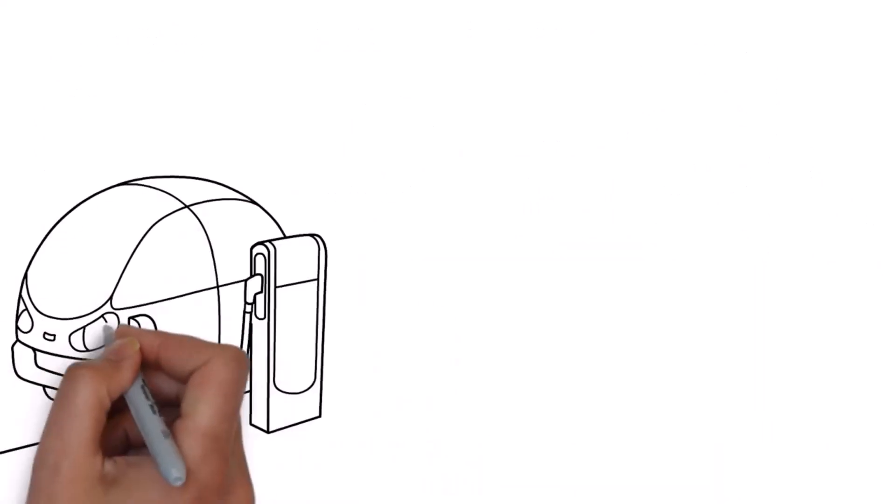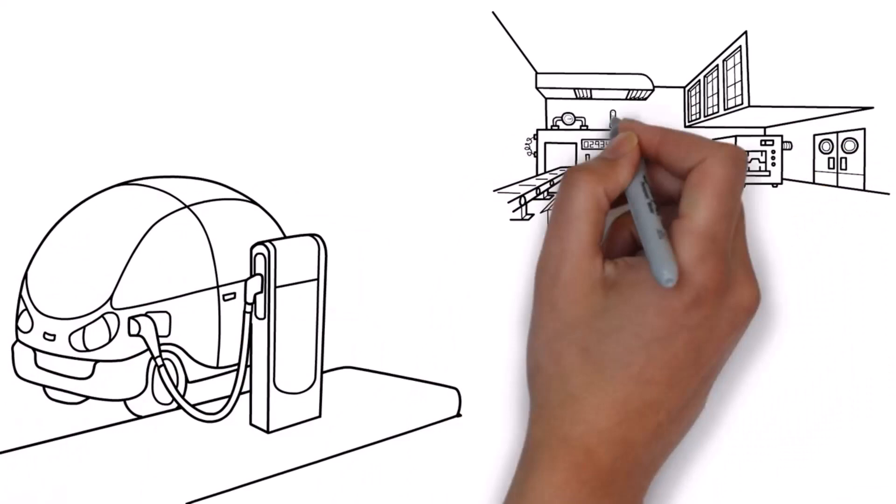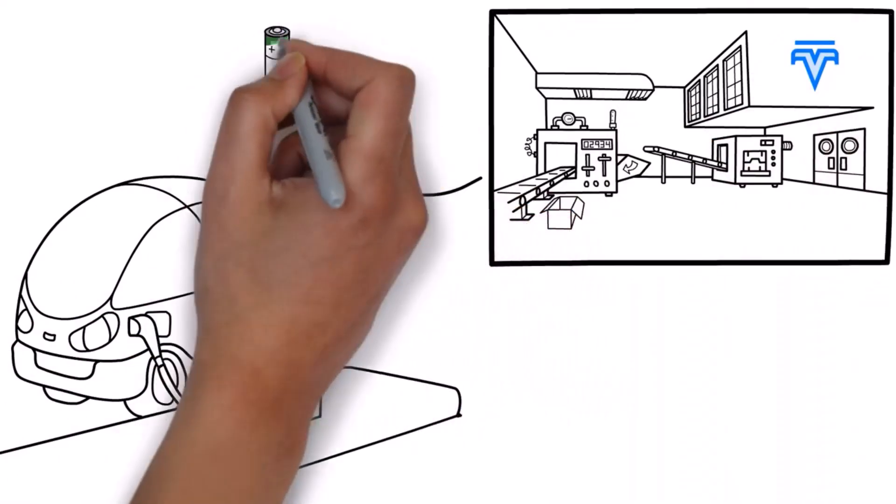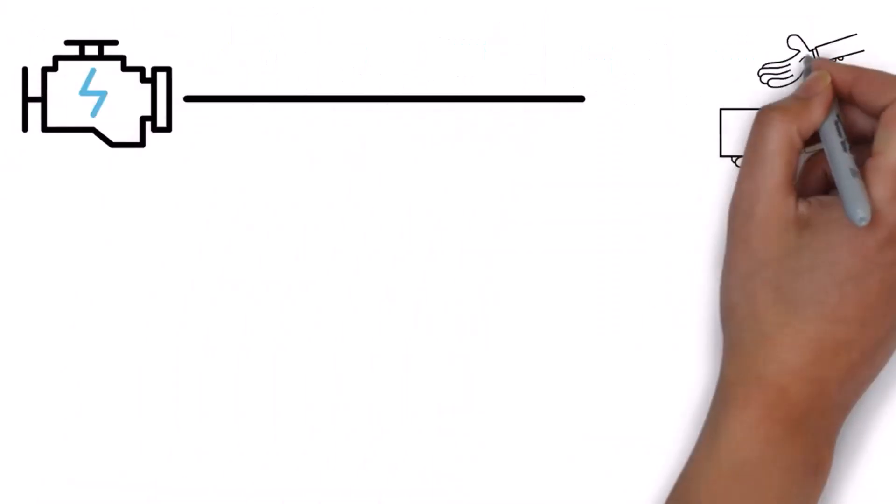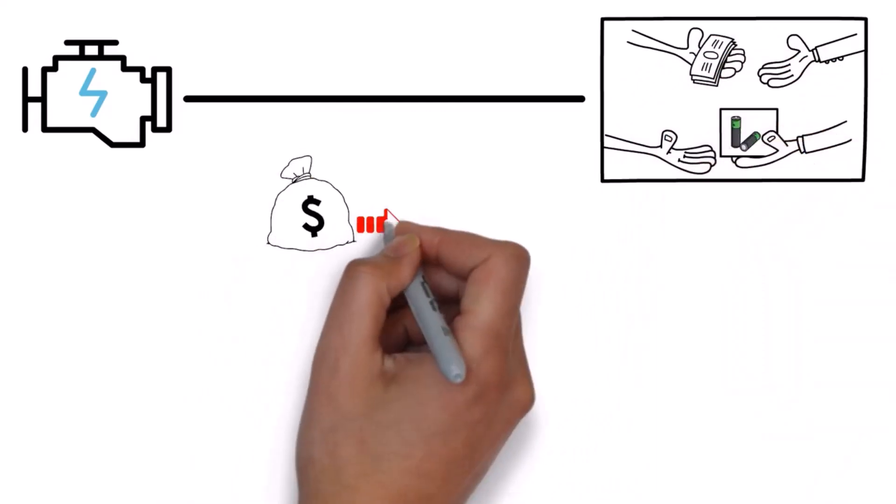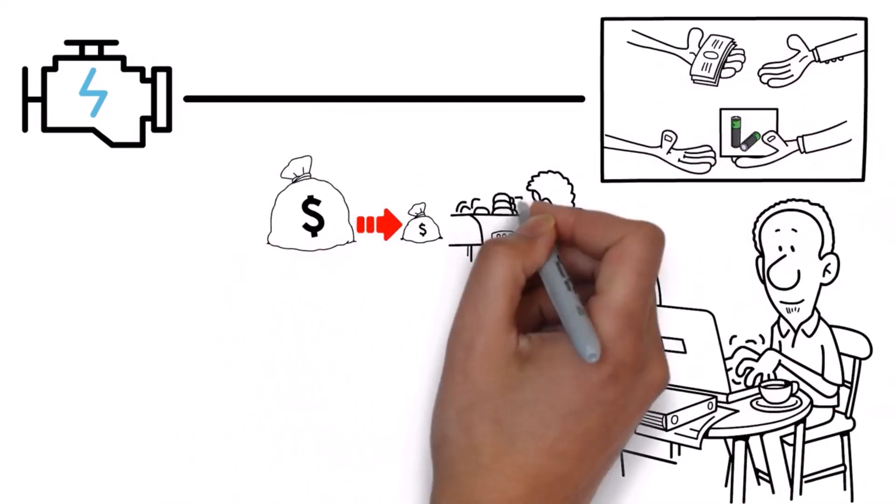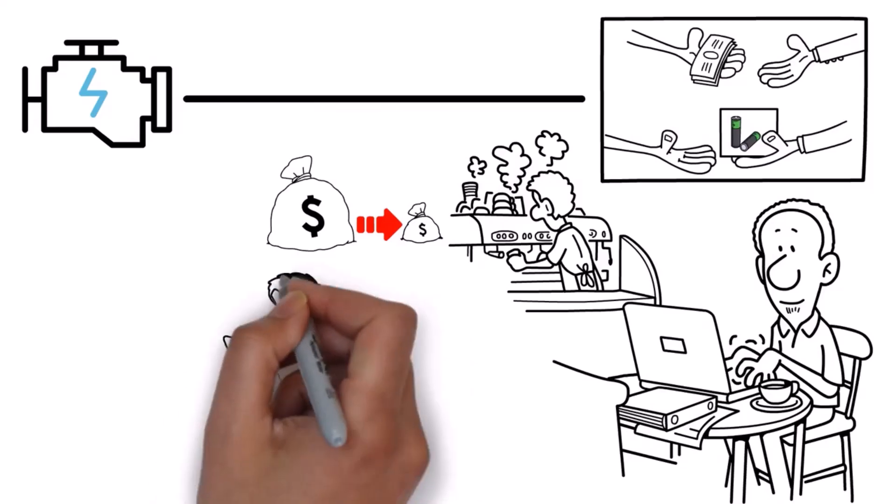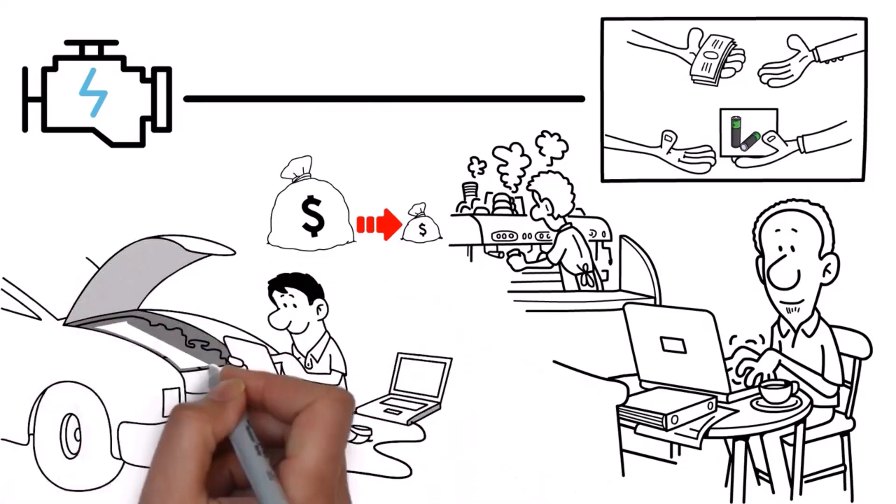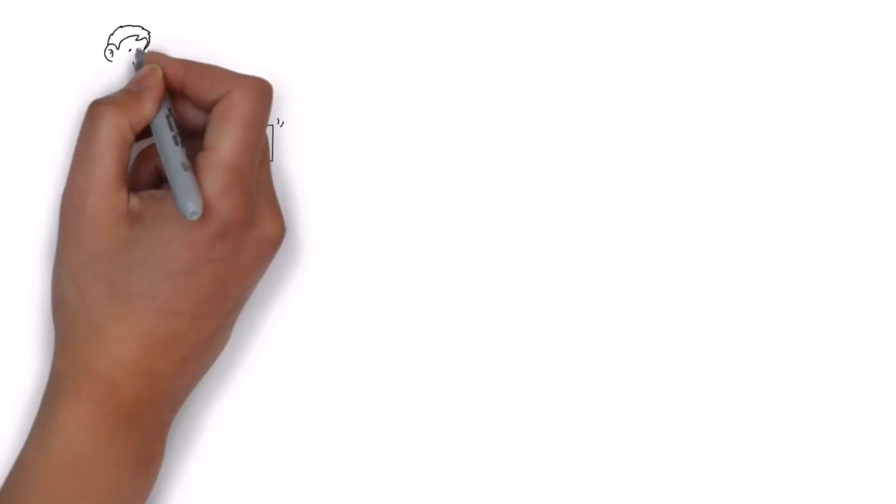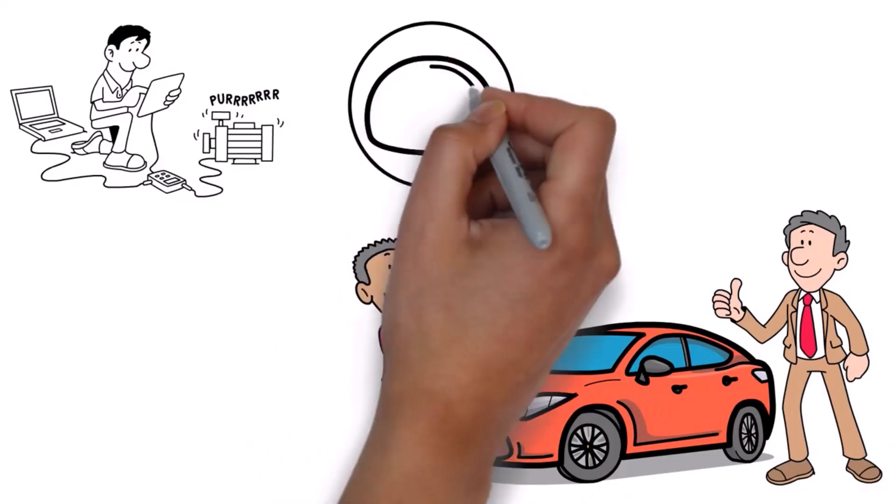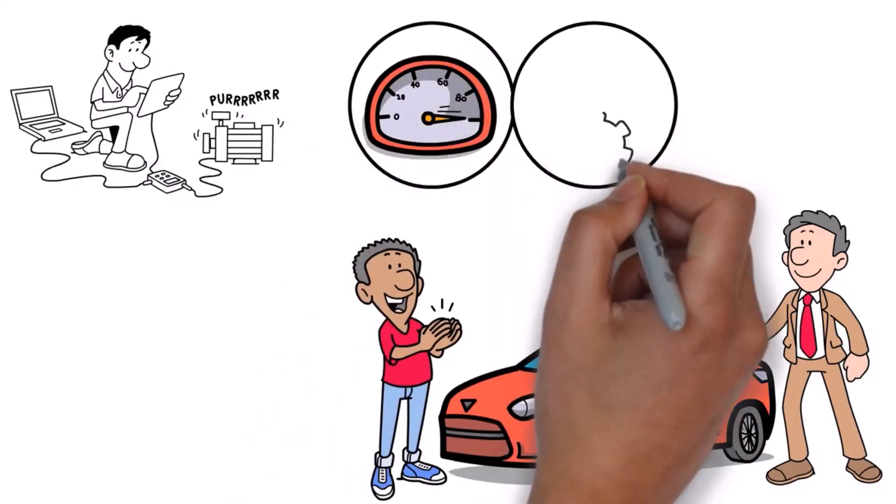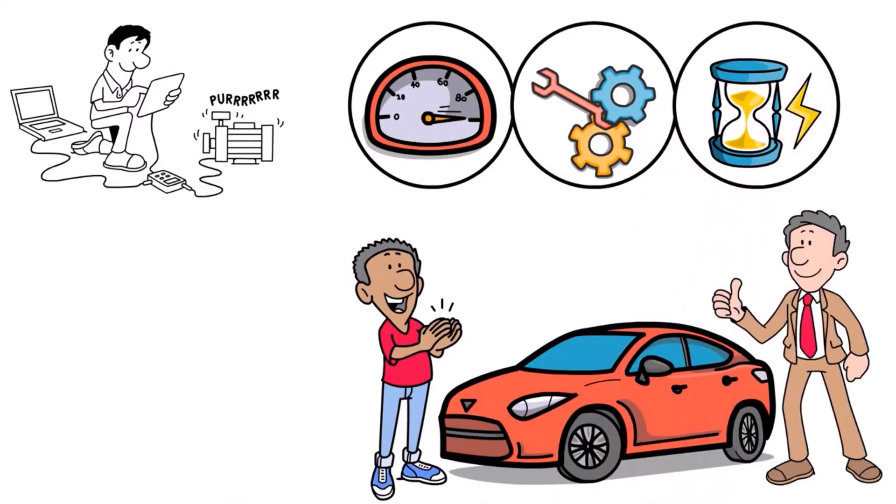Tesla's innovation edge. Tesla's edge in innovation cannot be overstated. Their gigafactories are marvels of modern engineering designed to produce batteries at a scale and cost that competitors find hard to match. By bringing battery production in-house, Tesla controls its supply chain, reduces costs, and drives innovation at an unprecedented pace. Another point to consider is Tesla's approach to over-the-air software updates. Unlike traditional automakers, Tesla continuously improves its vehicles post-purchase. These updates can enhance performance, add new features, and even improve battery life.